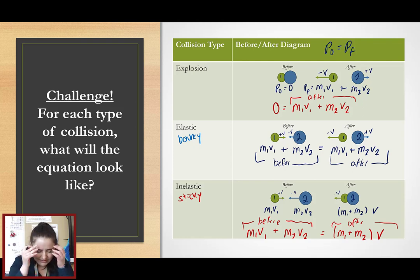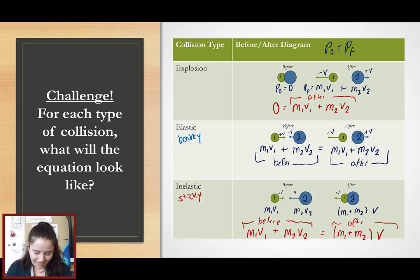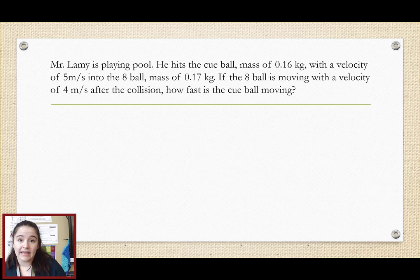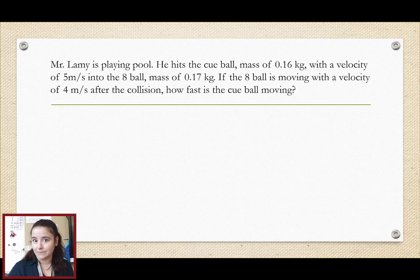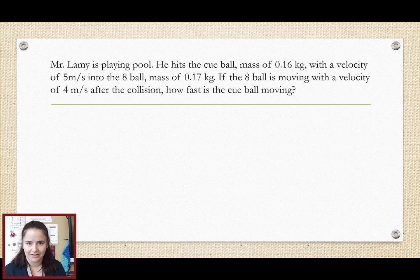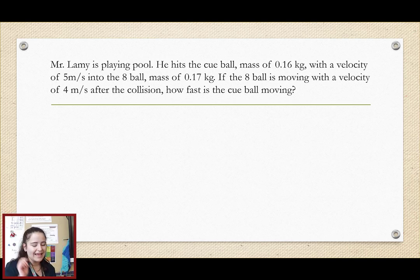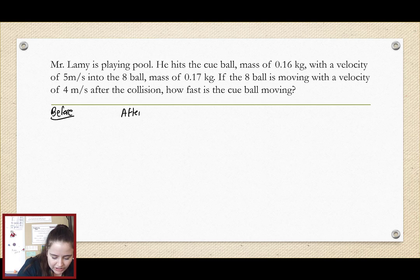Now that we have a good sense of this equation and what it looks like, let's try to apply it. We're going to be doing three example problems, one of each type. Let's get into it. Mr. Lammy is playing pool. He hits the cue ball, which has a mass of 0.16 kilograms with a velocity of 5 meters per second, into the eight ball, which has a mass of 0.17 kilograms. If the eight ball is moving with a velocity of 4 meters per second after the collision, how fast would the cue ball be moving? Would it have the potential to roll off into one of those holes?